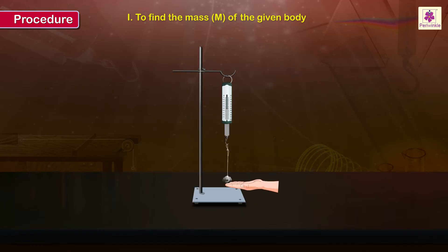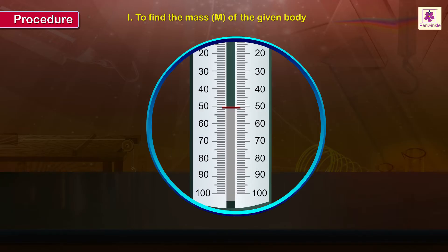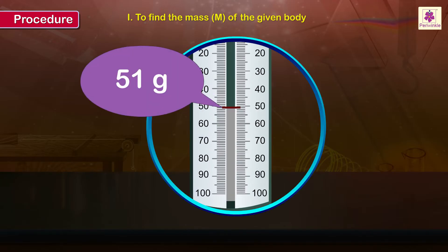Repeat the previous step one more time. This will give the W3 reading, which is equal to 51 grams.